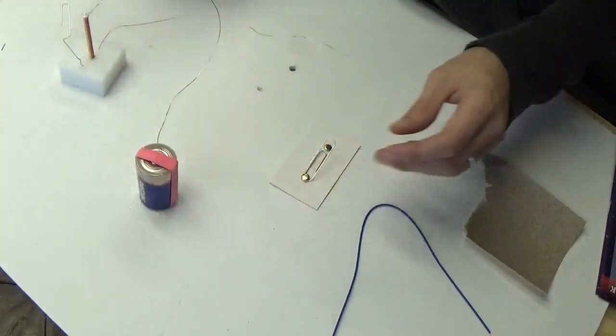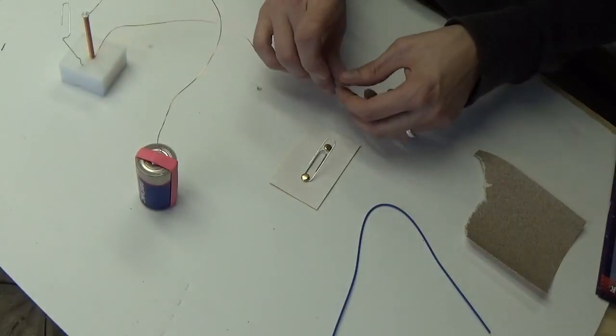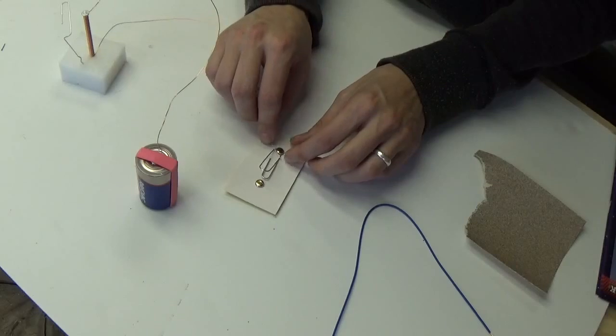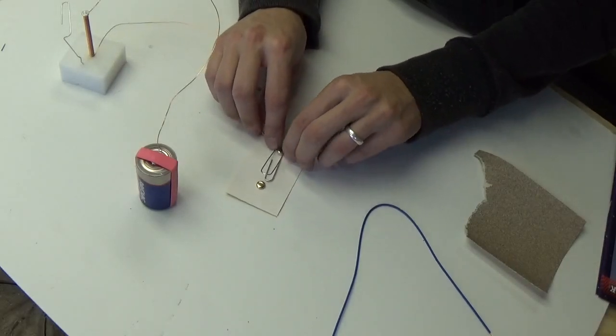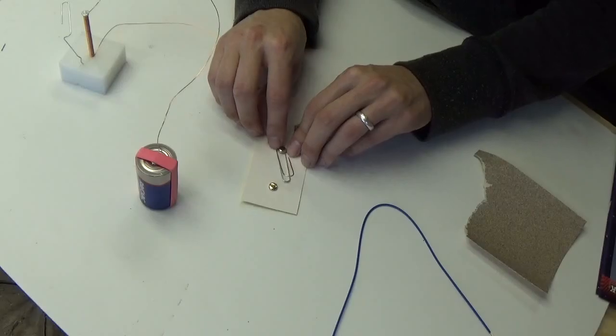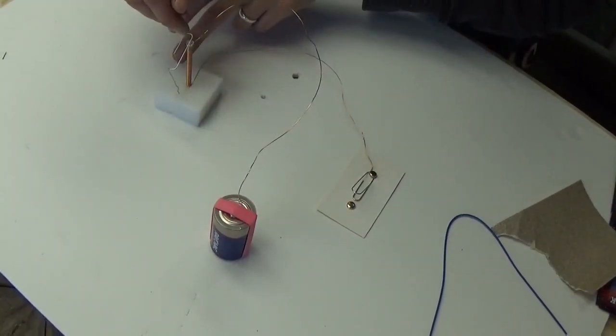And then the other end, you will put around the paper fastener where the clip is here. So now you have the setup like this.